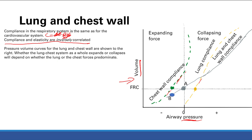The chest wall normally has a tendency to expand. As you can see, the chest wall curve is mainly on the left side of this graph because the chest wall likes to expand. The only exception is at very high volumes, where the chest wall will actually want to collapse a little. On the other hand, the lung — this yellow curve — is always on the right, so there is always a collapsing force on the lung. Lung wants to collapse; chest wall usually wants to expand.